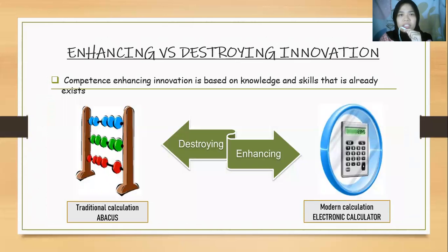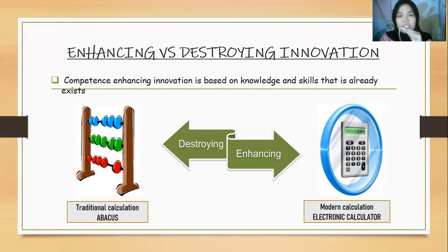Enhancing versus destroying innovation: competency-enhancing innovation is based on knowledge and skills that already exist. For example, we used traditional calculation like an abacus, and now we use modern calculation — the electronic calculator. We are destroying the traditional calculation and enhancing the modern one, which is easier, quicker, and faster for people to use. That's all. Thank you.